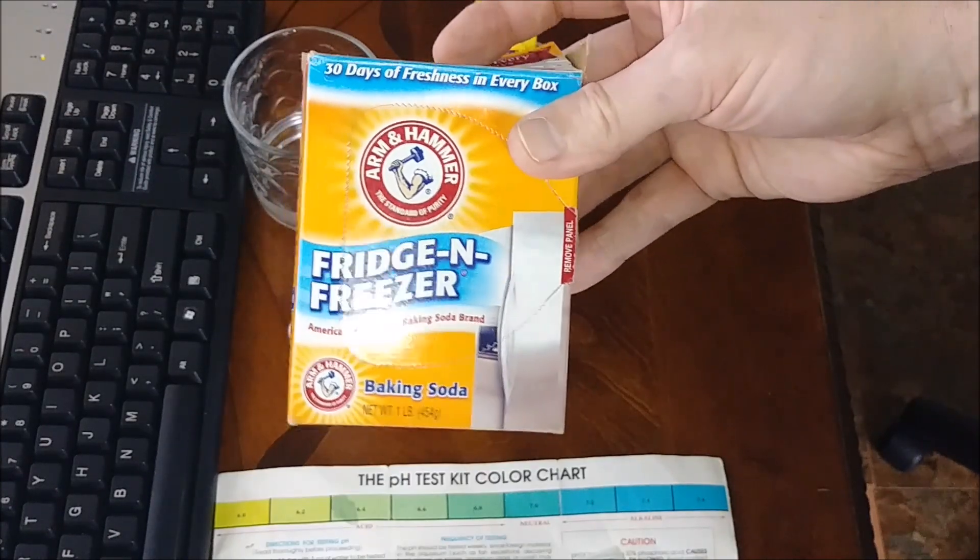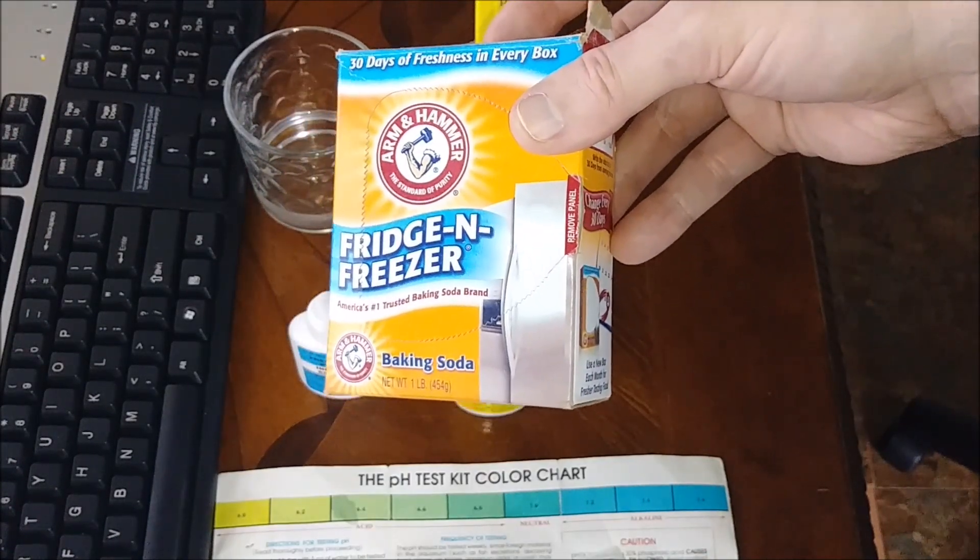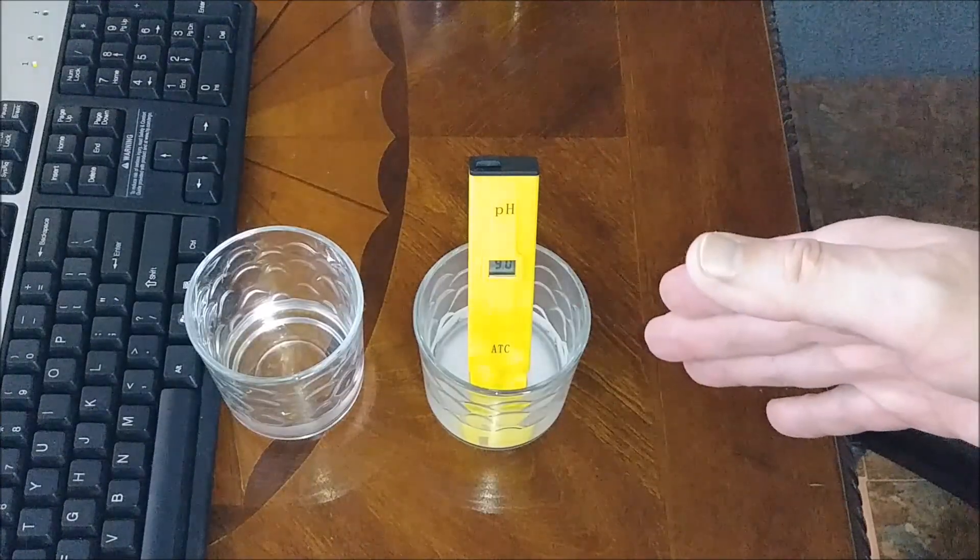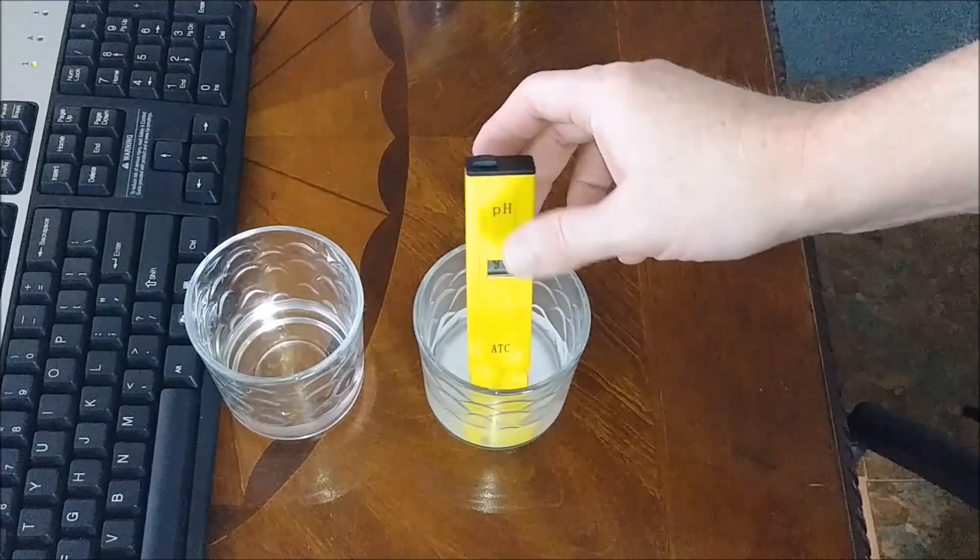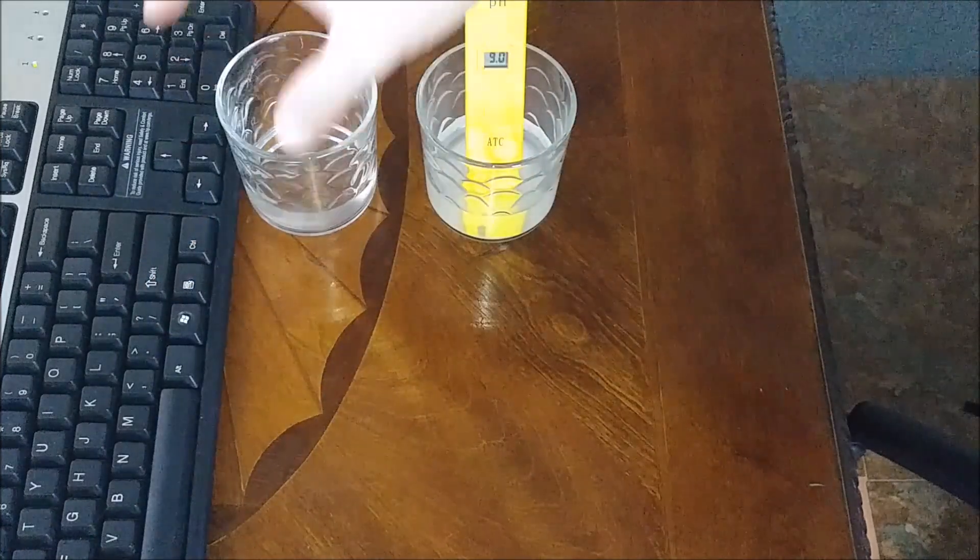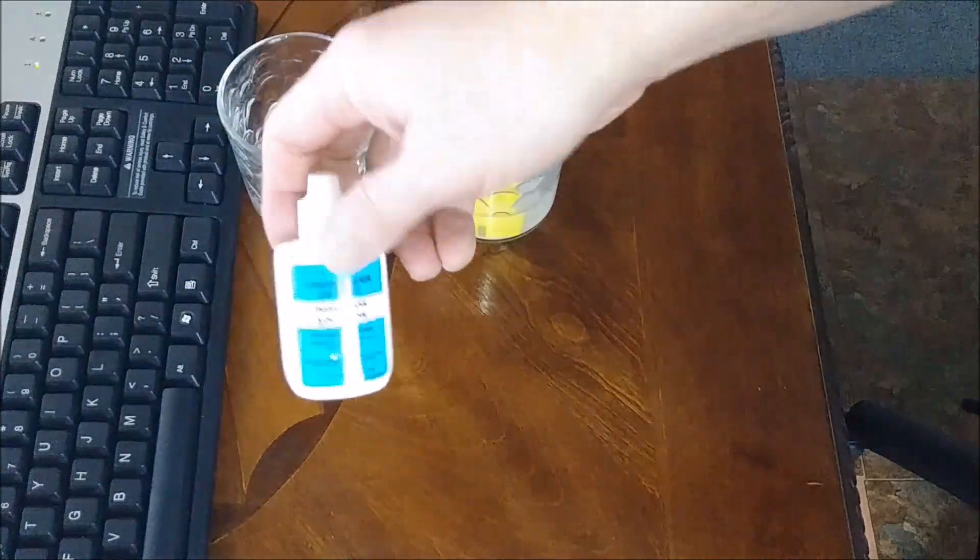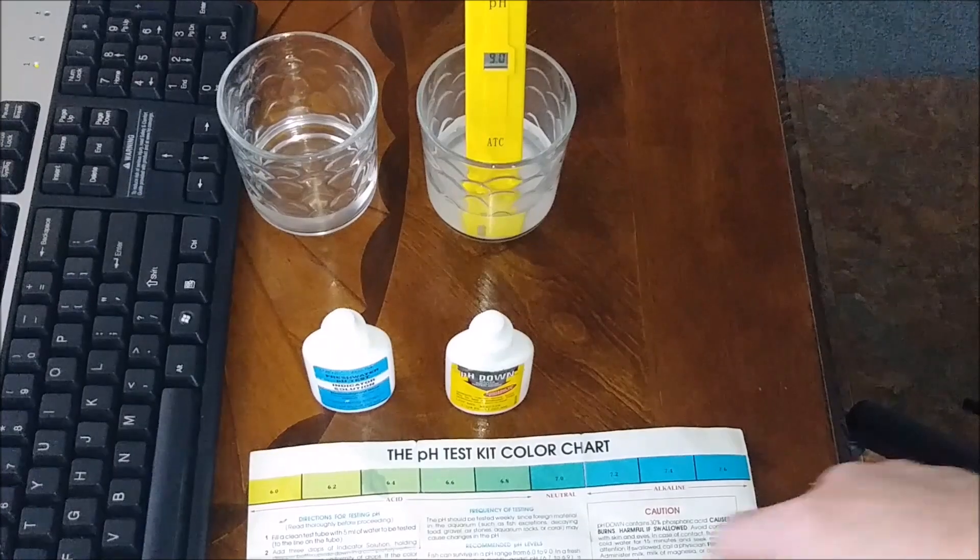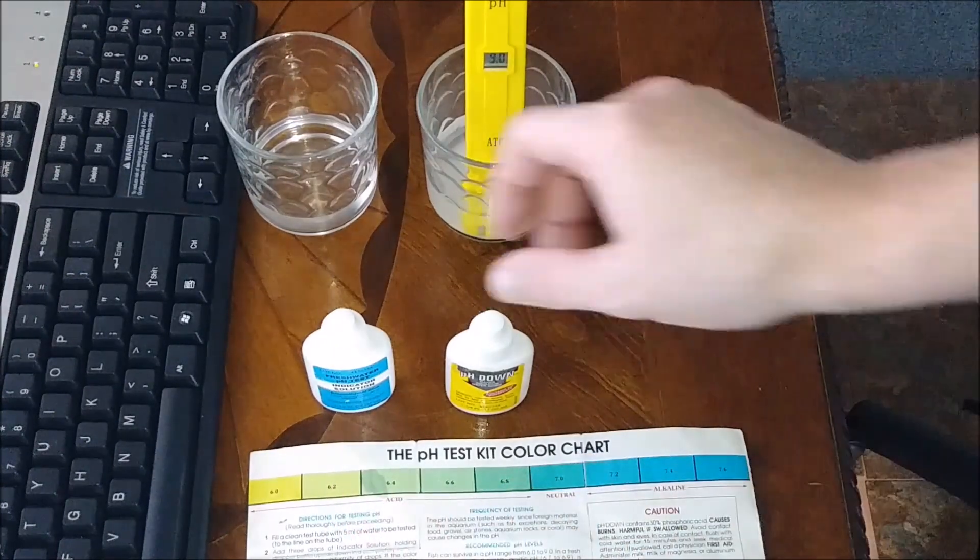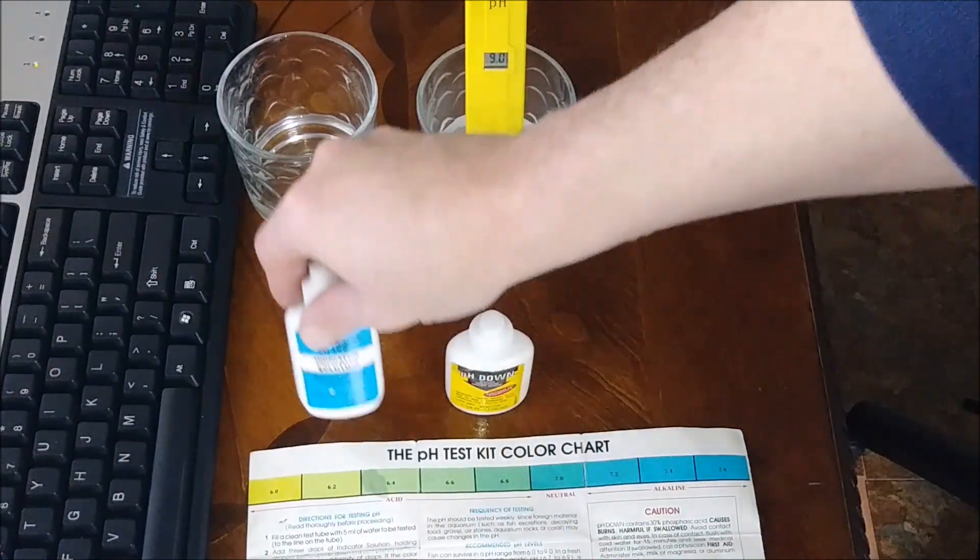It's another way of checking your pH on your tester. You can always do the old-fashioned way with the aquarium test kits to double-check, and you can check your pH by using a pH indicator with your test tube. These are pretty cheap; you can pick them up.